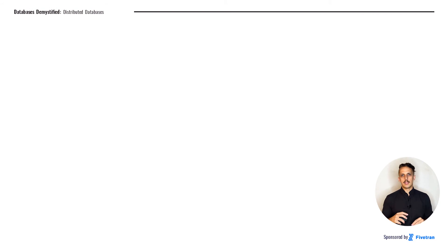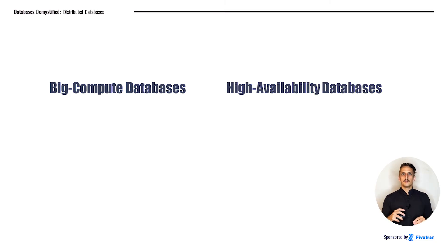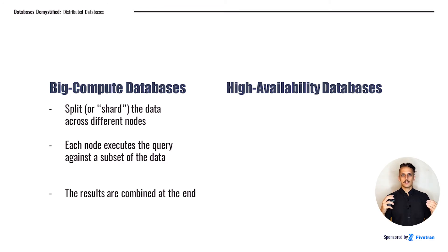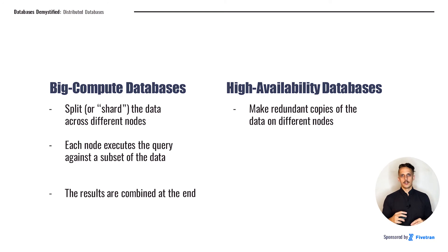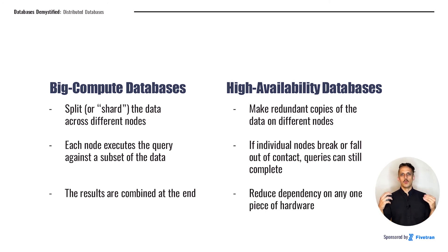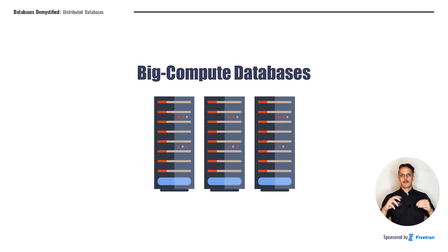Let's talk about the two big paradigms of distributed databases. The first is big compute databases, and the second is high availability databases. In big compute databases, we're going to split or shard the data across different nodes, and each node is going to execute the query against a subset of the data. Then we combine all of the results at the end, allowing us to process data faster by having multiple computers doing the work. In high availability databases, we make redundant copies of the data on different nodes, so that if one node breaks or falls out of contact, queries can still complete and our users can still use our system.